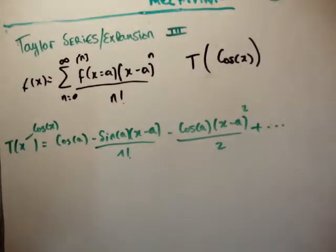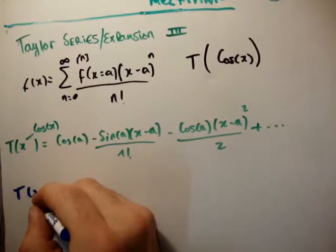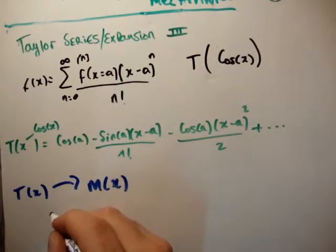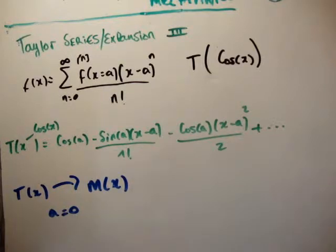And we know that in order to get from T(x) to M(x), we set a equal to 0. We center the function around x equals 0, or a equals 0.